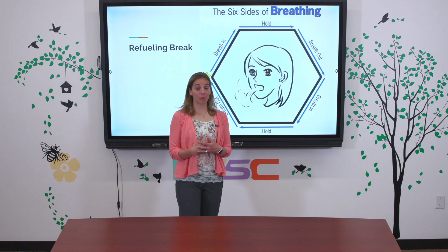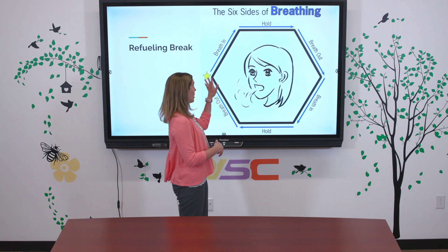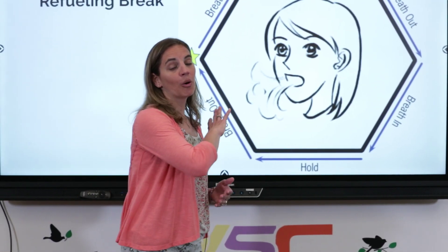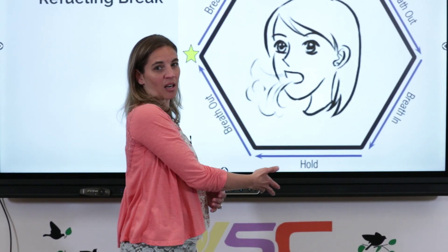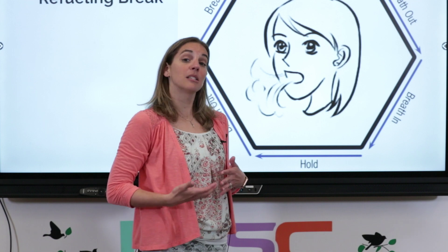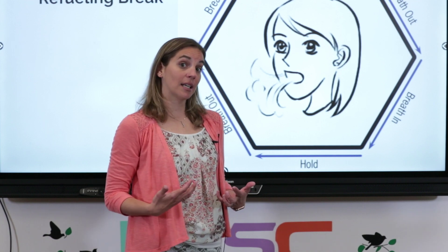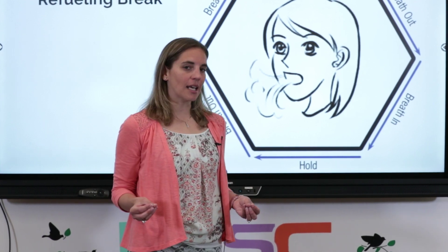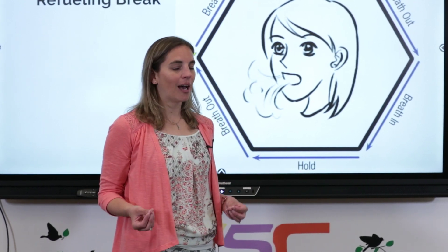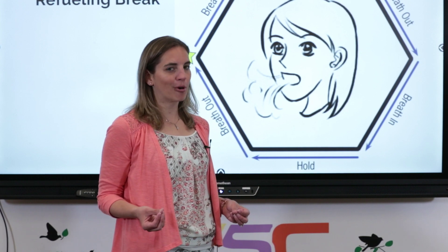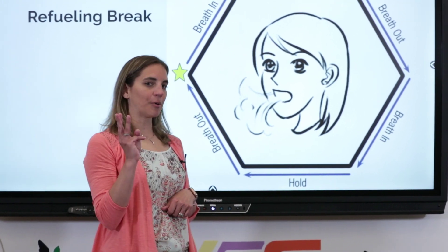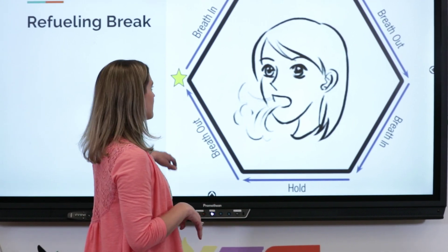Okay, so here's how this one works. I'm going to start right here at the start. We're going to go around this hexagon three times, taking nice big deep breaths in, holding it for just a second or two, and then letting it out. I promise I won't make you hold your breath too long. All right, here we go, three times around our hexagon.